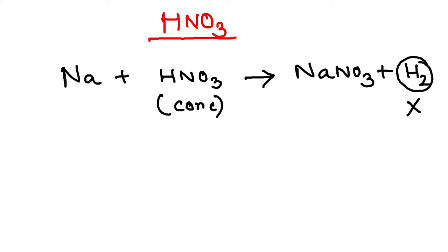This is a specialty of HNO3. If I take HCl in place of HNO3, I will get this hydrogen. But if I take HNO3, I won't get the hydrogen. So why does it happen?